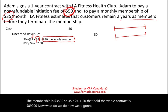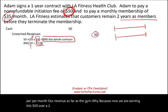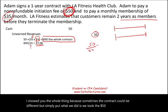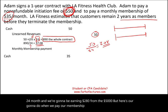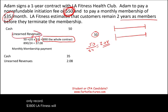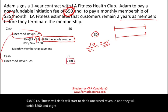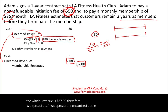We take the whole contract of $890 and divide it by 24 months to get our monthly revenue figure. Simply put, we took the $50 and divided it by 24 months, earning $2.08 from the initiation fee each month. So when the membership payment of $35 comes in, LA Fitness records $37.08 in total: they debit unearned revenue for $2.08 and credit membership revenue for the full $37.08. This is how we spread the non-refundable fee over the life of the contract.